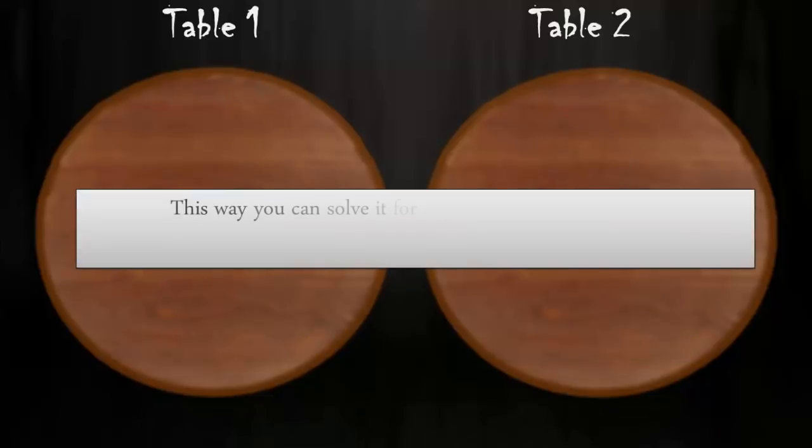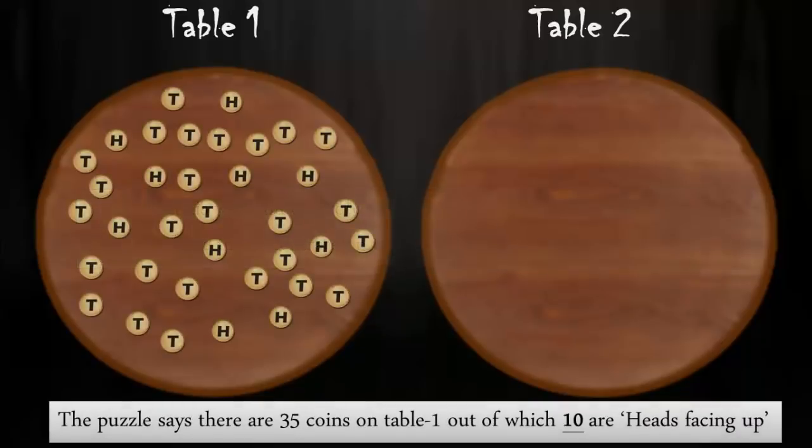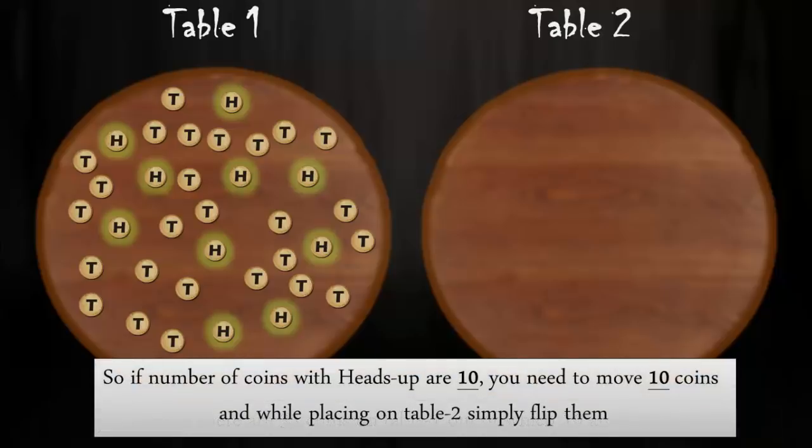This way, you can solve it for any given number of coins. You only have to concentrate on the number of coins with heads facing up. The puzzle statement says there are 35 coins on table 1 out of which 10 are heads facing up. Since 10 coins have heads up, you should move any 10 coins and while placing on table 2 simply flip them.